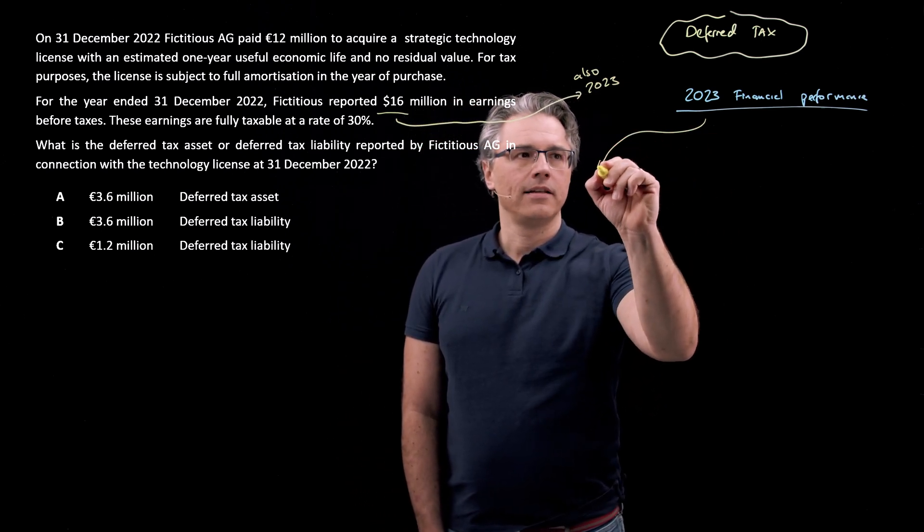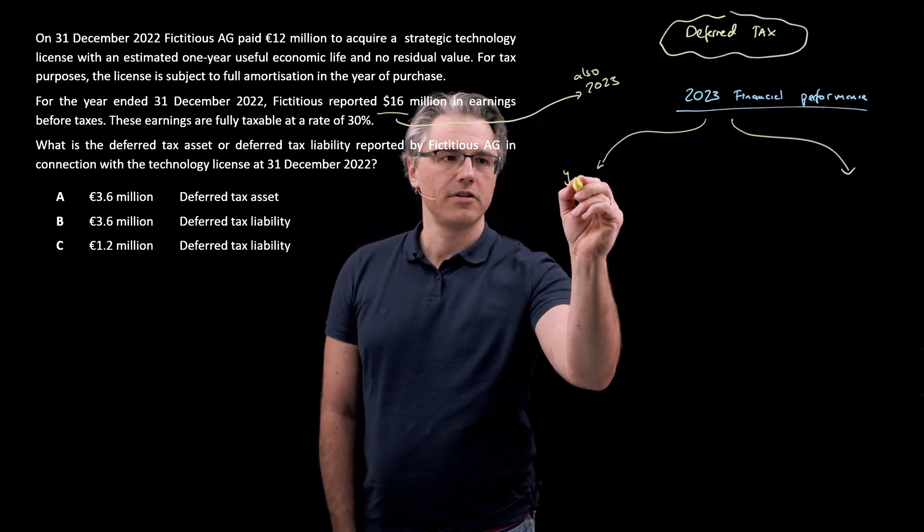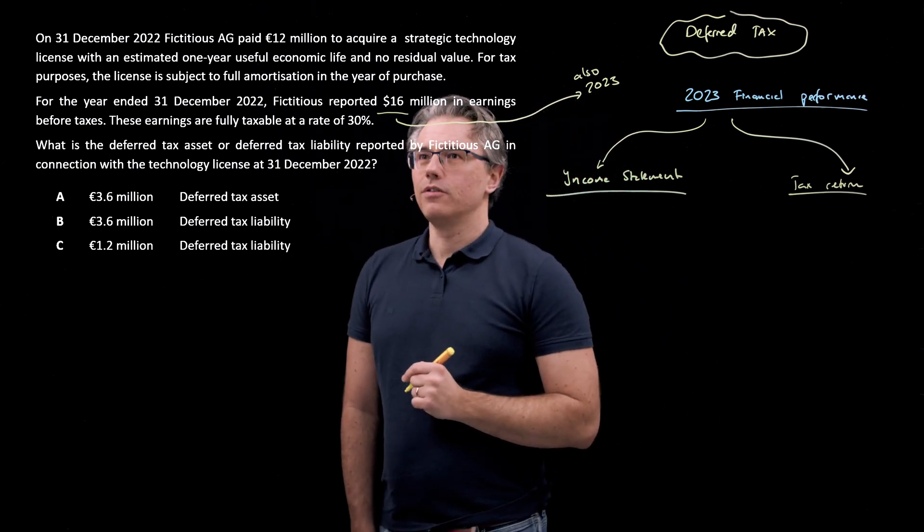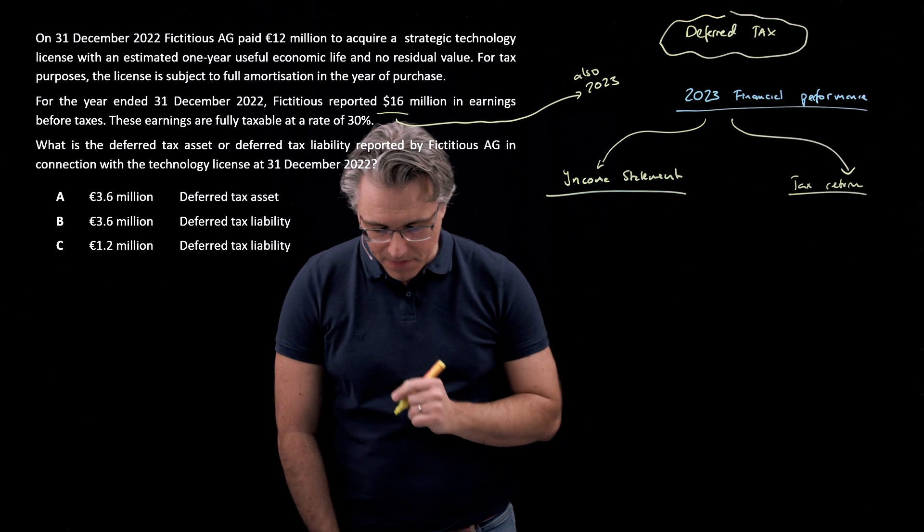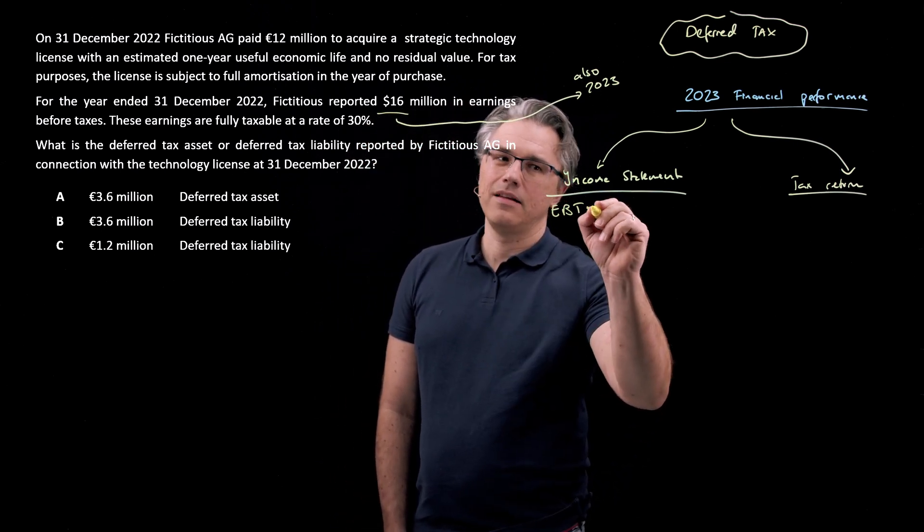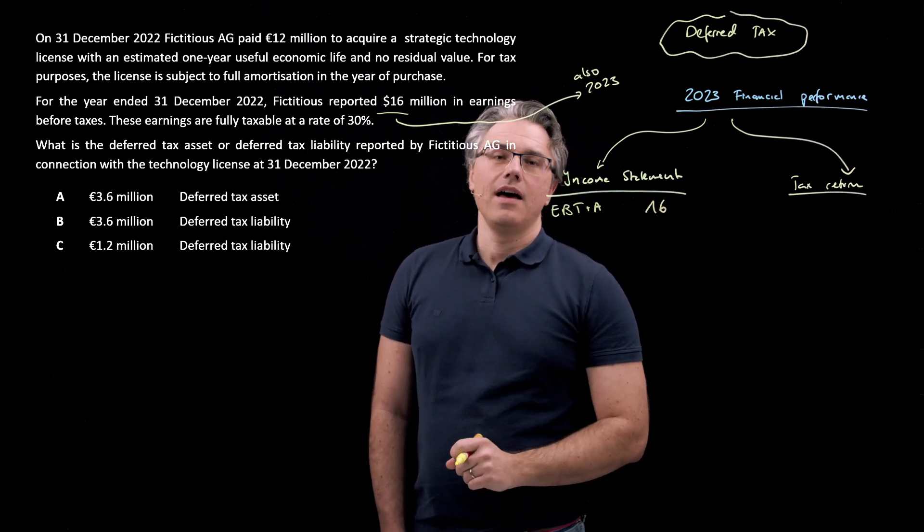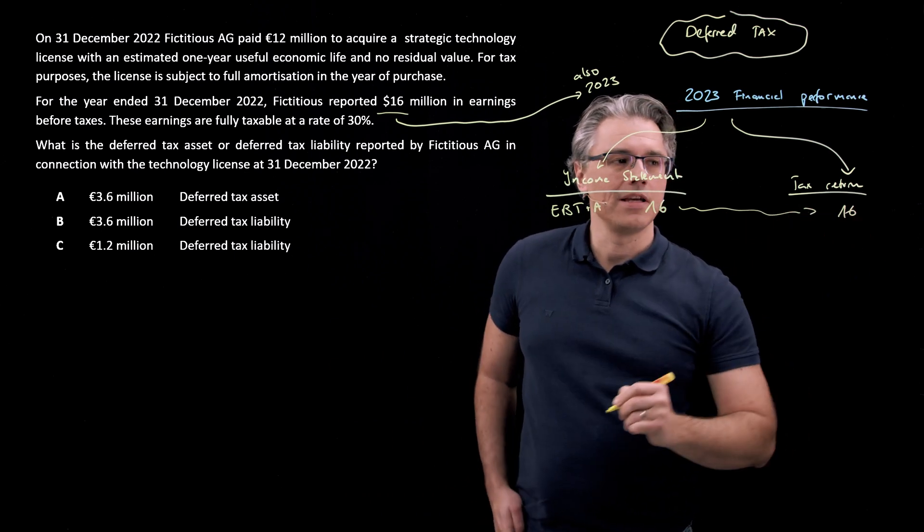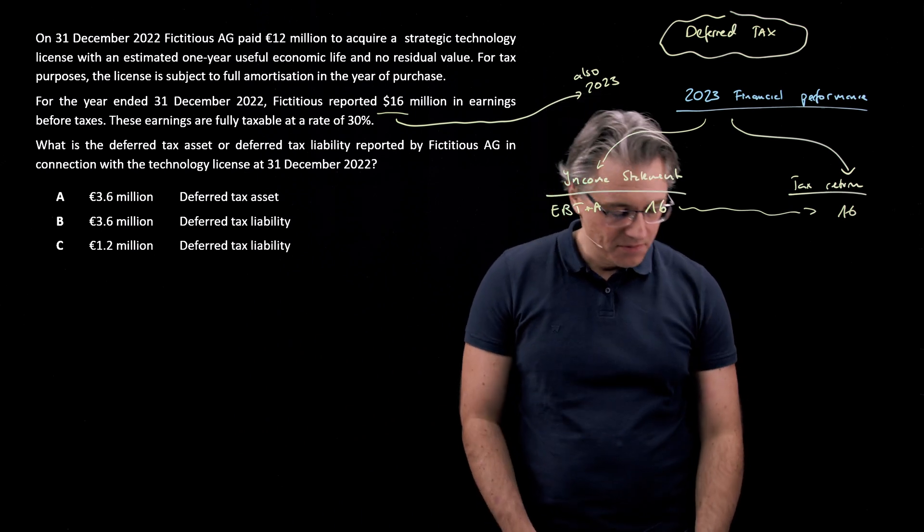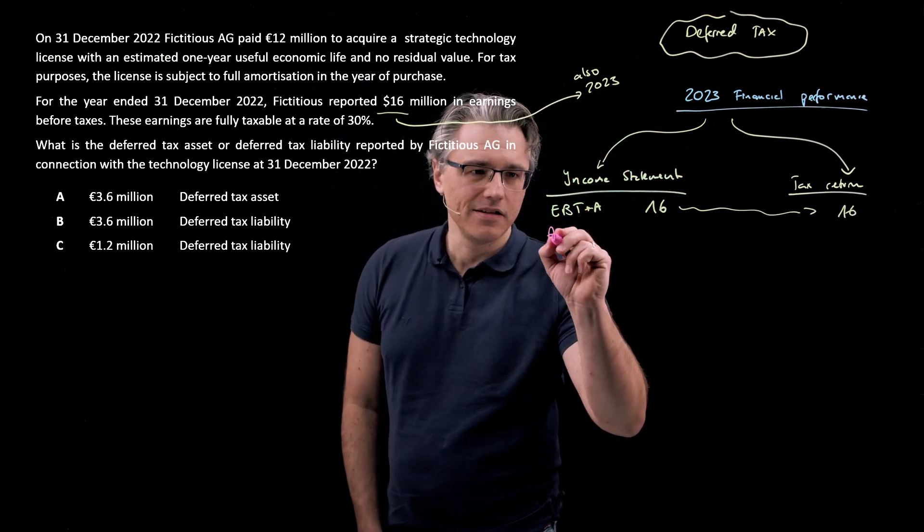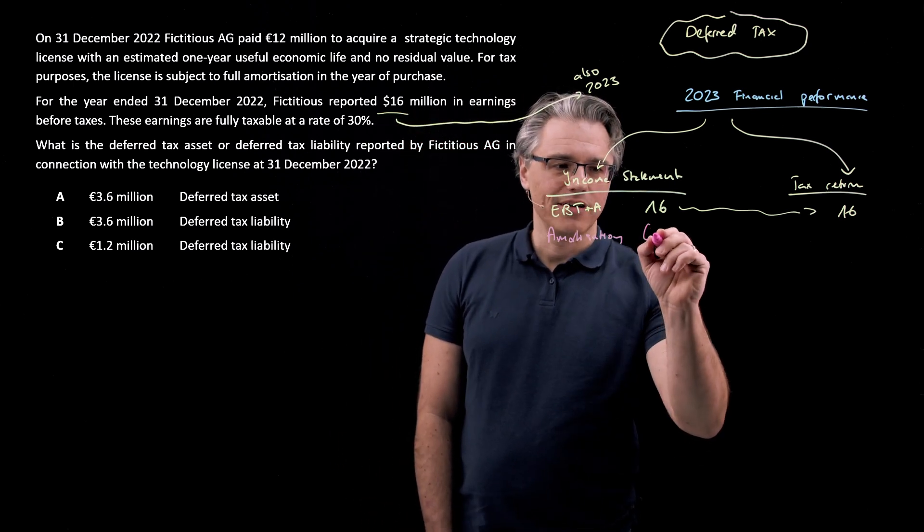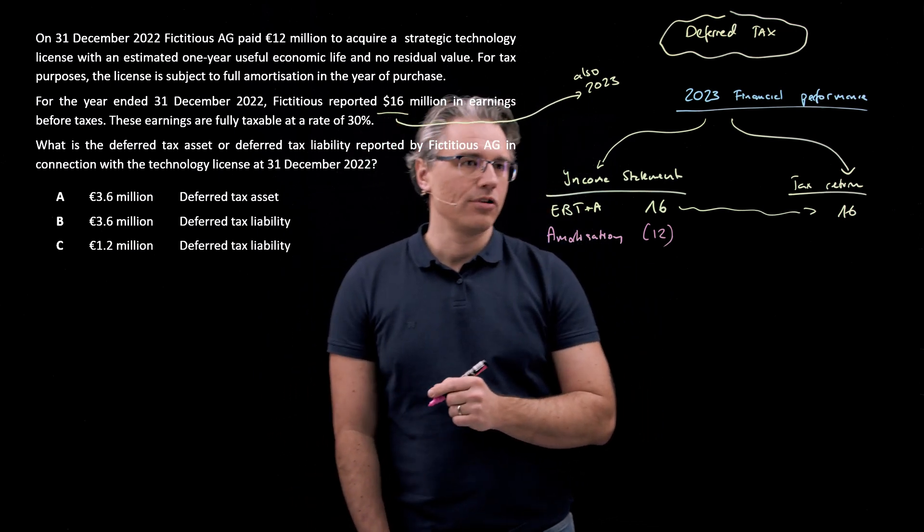We will be analyzing this performance from an income statement perspective, just like before, but also a tax return perspective. And if we've got earnings before taxes of 16 million, earnings before taxes and amortization of 16. I wanted to make this before amortization because I was waiting for the amortization component to come into my income statement computation in the year 2023, because this is when we are using the acquired license. We're getting the benefits of it. And that's when we should also amortize it. So there's going to be a 12 million amortization expense or charge in the income statement.